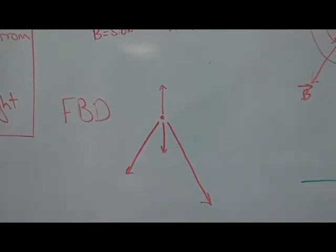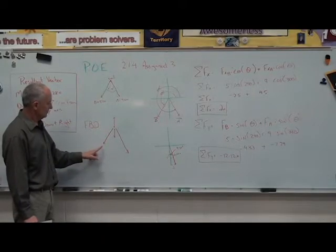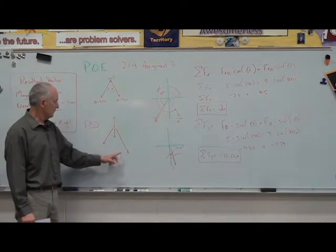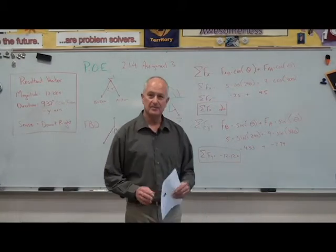We have the nail represented by the dot. It has its force normal and the force of gravity, and then it also has two different vectors, one at five newtons and one at nine newtons. So to represent them correctly, we would have the one line definitely longer than the other. That was the first part of the assignment.